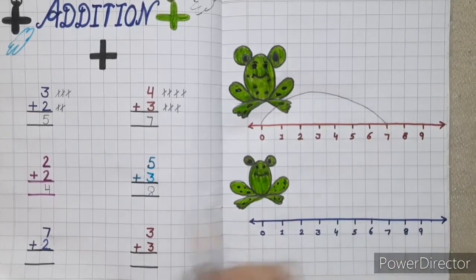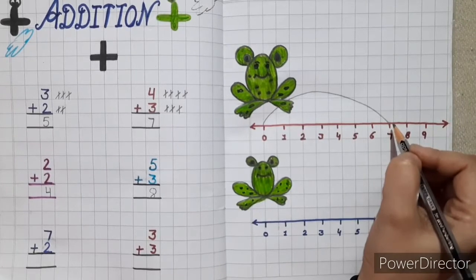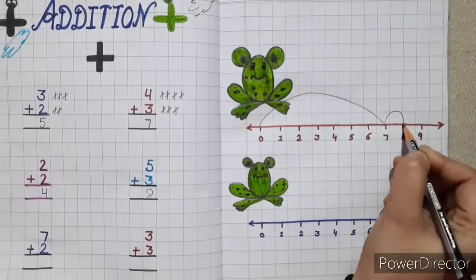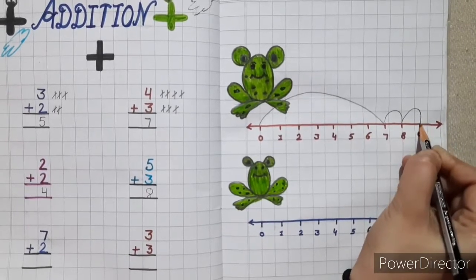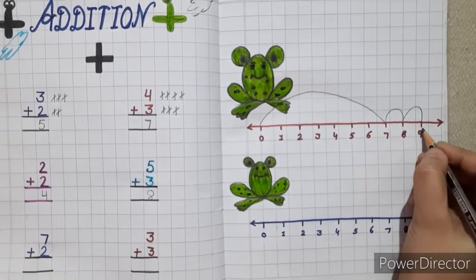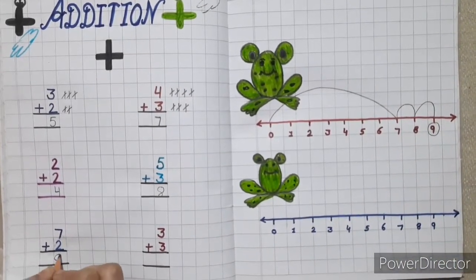Now next is 2. So frog will jump 2 times from here. 1, 2, like this. Now answer is 9. So write 9 here.